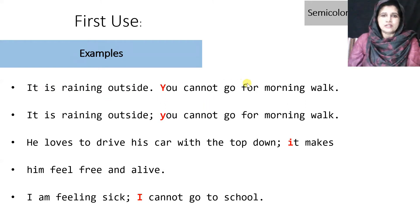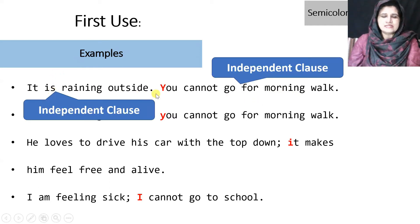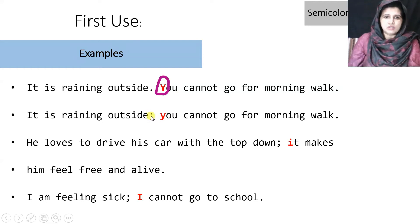Here you can see two sentences separated by periods. The first sentence is 'It is raining outside.' The second is 'You cannot go for a morning walk.' Both are independent clauses — complete sentences giving complete sense. Notice that after a period, the first letter is always capitalized. With a semicolon, we can join these two sentences together: 'It is raining outside; you cannot go for a morning walk.'